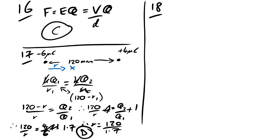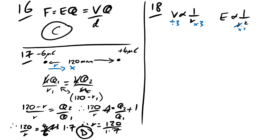Question 18: electric field strength and potential at point T, which is 3 times further from a point charge. V ∝ 1/R — R multiplied by 3, so V goes to one third. E ∝ 1/R² — R multiplied by 3 so R² multiplied by 9, E goes to one ninth. Answer is D.